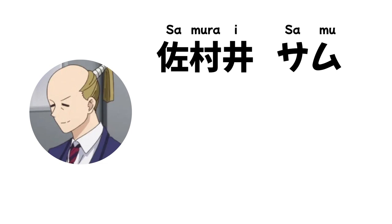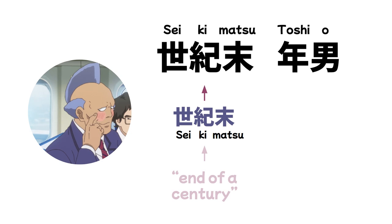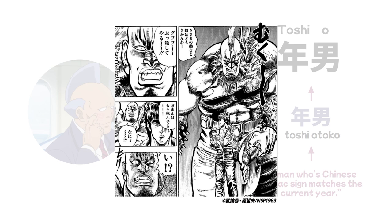The third of this group is Seikimatsu Toshio. 'Seikimatsu' means 'end of a century,' and 'Toshio Toko,' which uses the same kanji as 'Toshio,' means 'a man whose Chinese zodiac sign matches the sign of the current year.' These may allude to the fact that Toshio looks quite a bit older than his age. Some Japanese sites noted he looks like he'd fit into the classic shonen manga 'Fist of the North Star' — which takes place at the end of the 20th century, making 'Seikimatsu' a key word in that franchise.